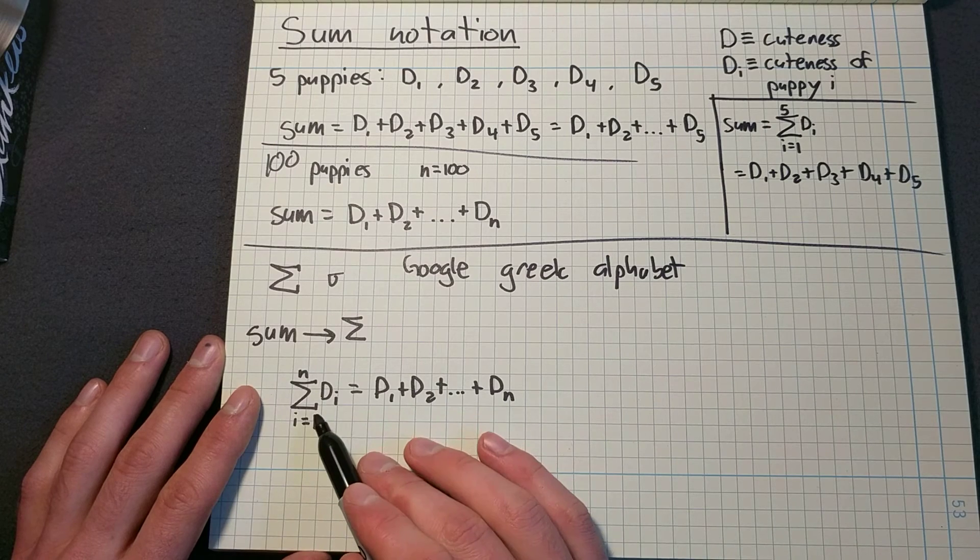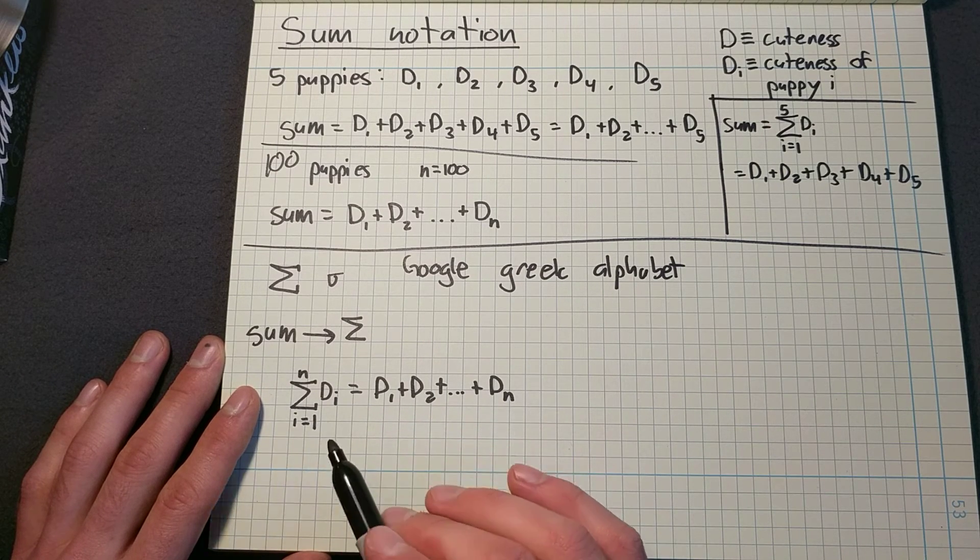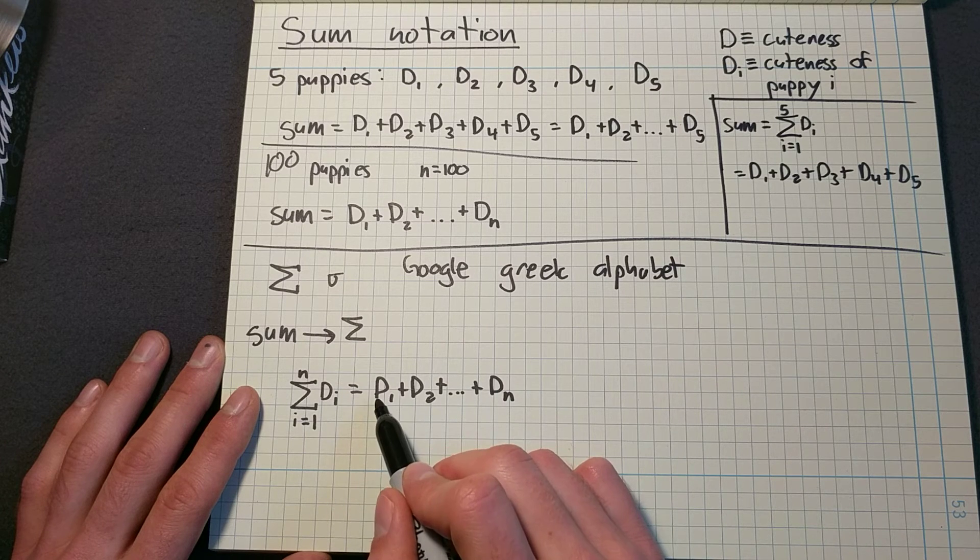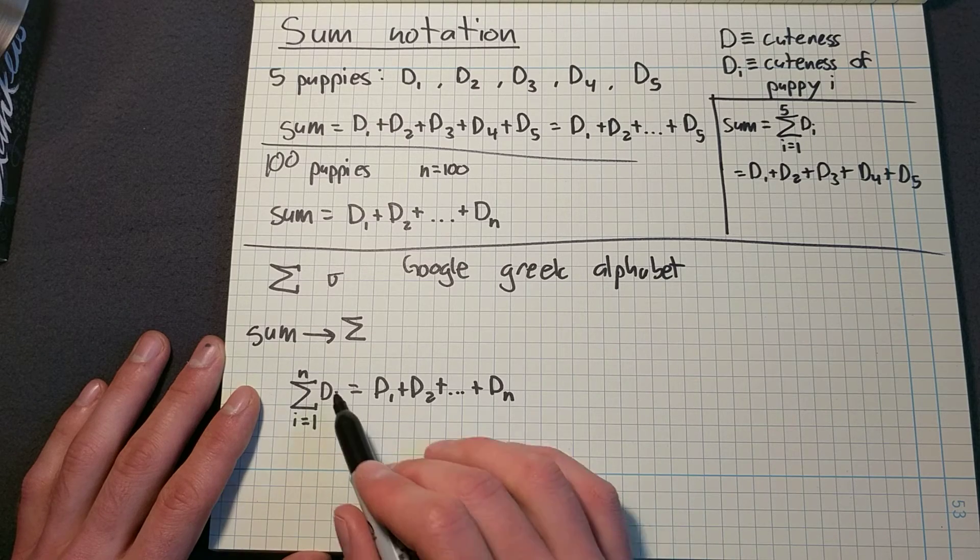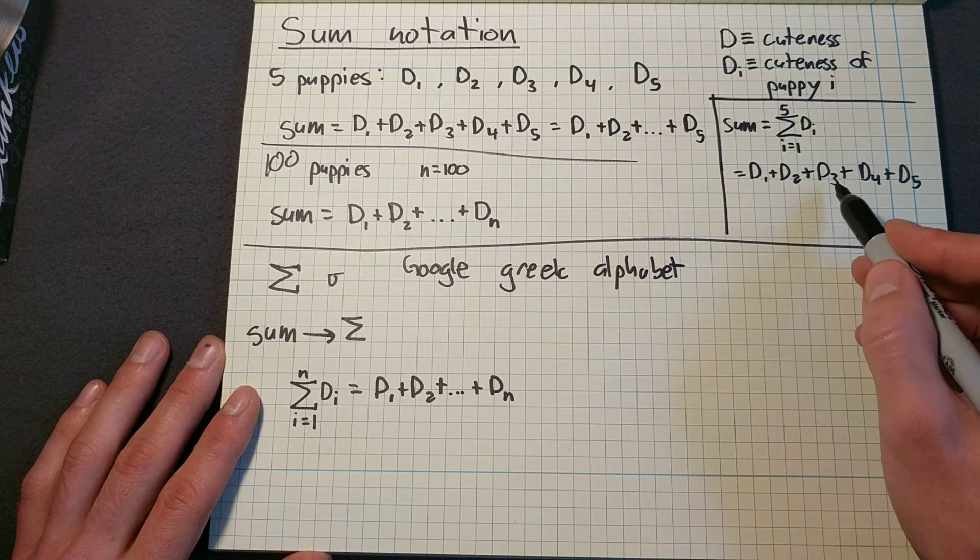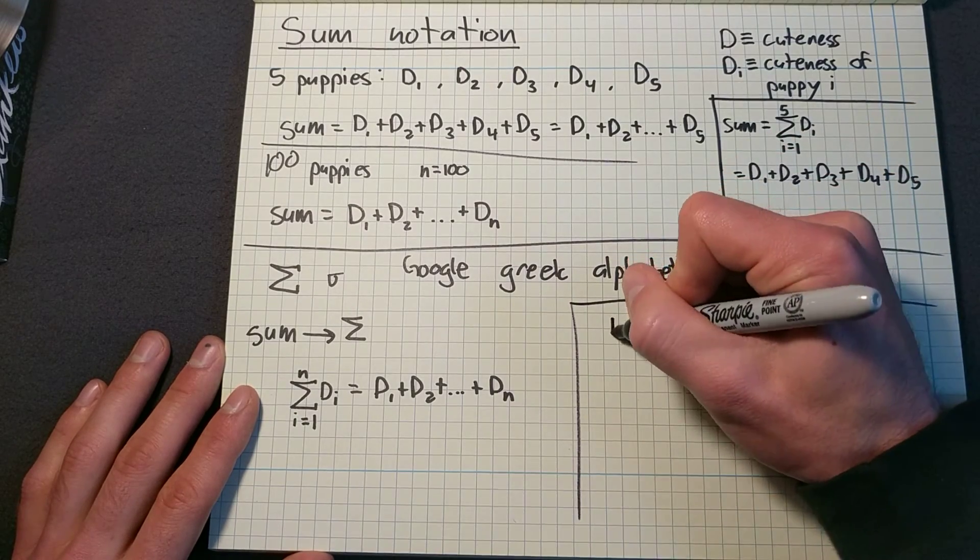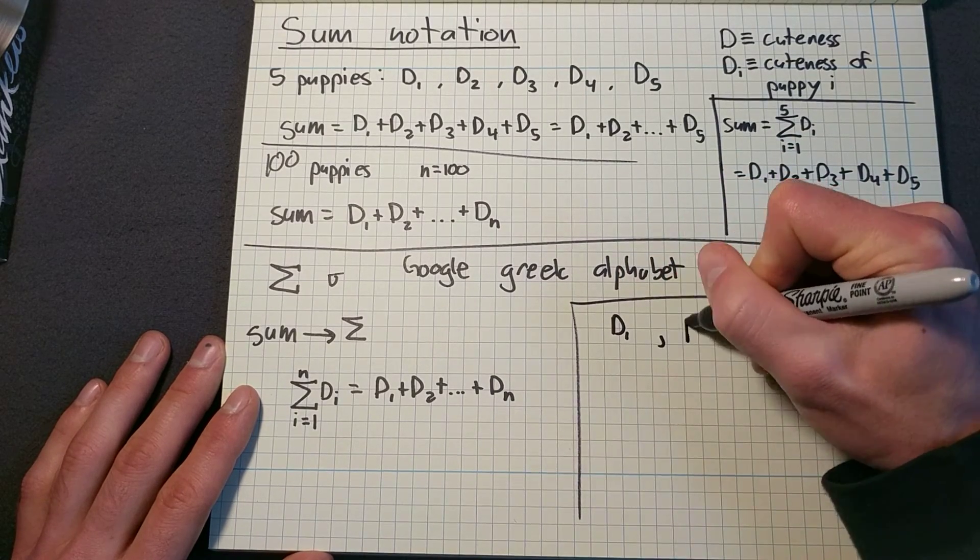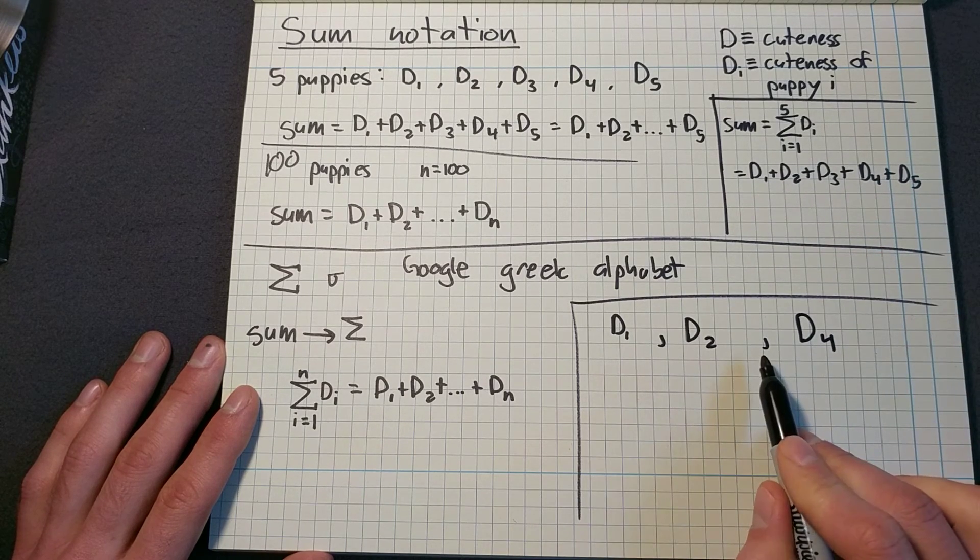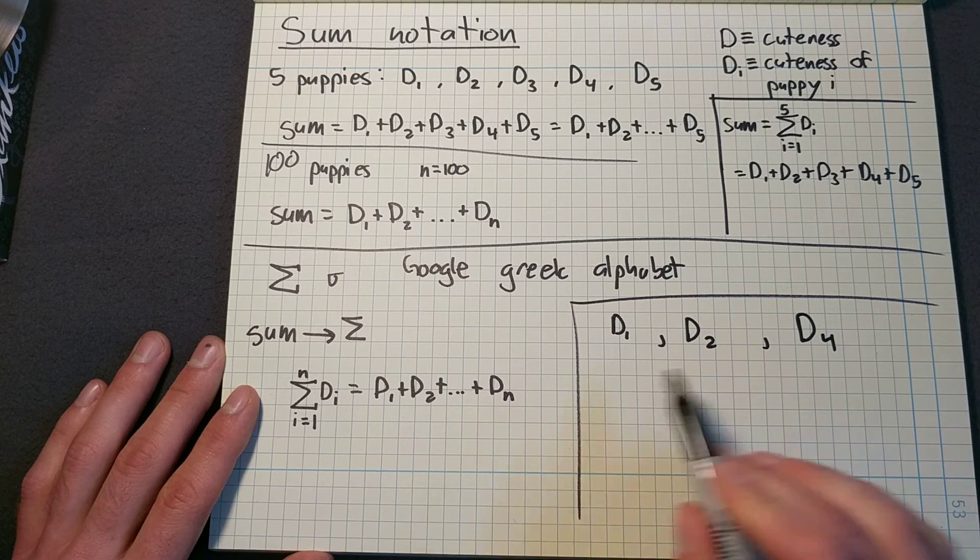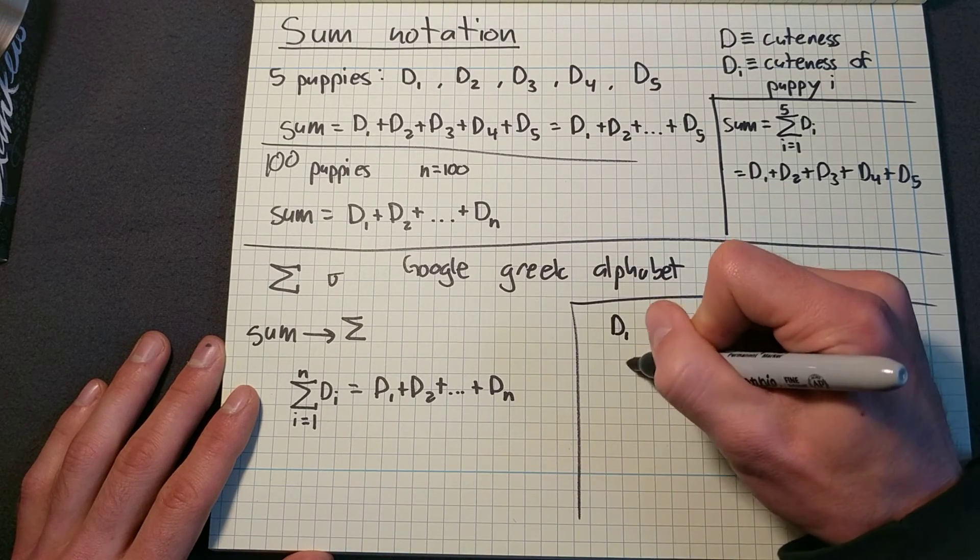Now note, if you're going to use this sigma notation, it must be true that you have a variable D for all of I's from one to N. Now this will not work if we were missing a D three, for example. So let's say we only had D one, D two and D four. So we don't have a D three. I can't do this anymore. I can't use the sigma notation.